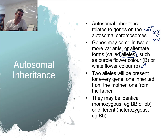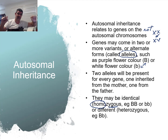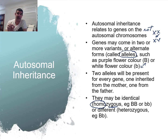We get two alleles for each gene — one inherited from our mother and one from our father. They can be the same, in which case we call the organism homozygous — from 'zygote,' the fertilised egg, where the two genes come back together. Meiosis separates genes into gametes, the sperm and egg, then fertilisation brings them back together. So we could have big B big B, or little b little b — homozygous. If you get different ones — big B from mum, little b from dad — then we're talking heterozygous: hetero meaning different.